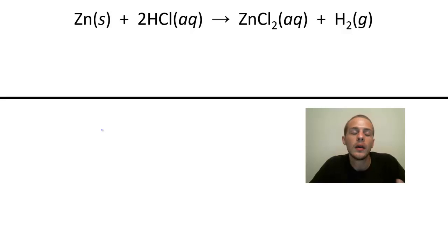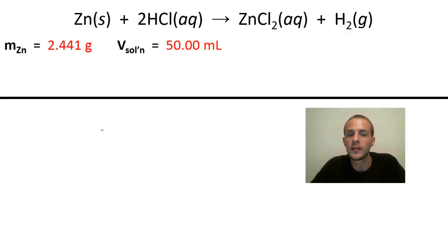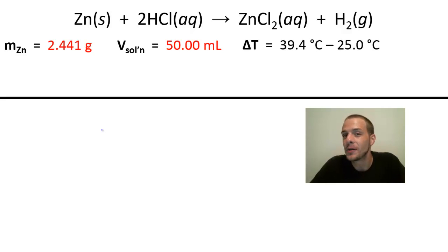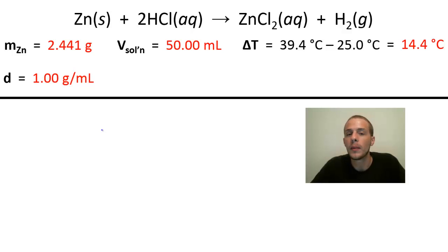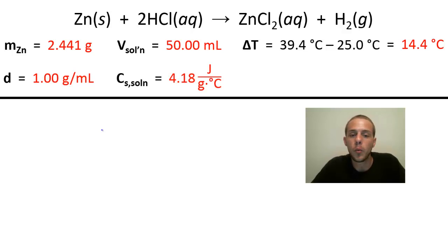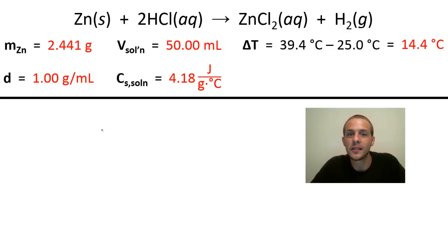Let's identify all the given information. The mass of zinc is 2.441 grams. The volume of solution is 50.00 mL. Delta T equals the final temperature minus the initial temperature: 39.4°C − 25.0°C = 14.4°C. Since we assume the solution has the same properties as water, the density is 1.00 g/mL and the specific heat is 4.18 J/g·°C — a value worth committing to memory for thermochemistry problems.